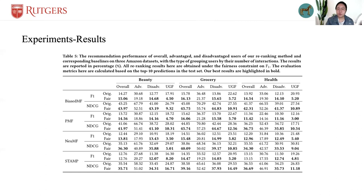Comparing the advantaged and disadvantaged groups across the four baselines, we can find that there is a big difference in recommendation performance between the two groups. Take the results of NeuralMF on the grocery dataset as an example.